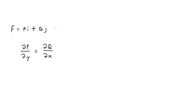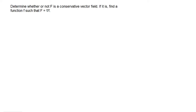Another way you can think about it is if you write this in component form, you can rewrite it as (p, q), where p is the x component and q is the y component. So if you take the partial derivative of the x component with respect to y, and that equals the partial derivative of the y component with respect to x, then you know the vector field f is conservative. For this first set of problems, let's determine whether or not f is a conservative vector field, and if it is, find a function f such that the vector field equals the gradient vector.